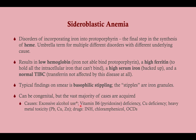Sideroblastic anemia can be due to alcoholism, B6 deficiency — usually associated with isoniazid — copper deficiency (Menkes disease for Step 1 only), heavy metal toxicity with lead being the main one, and drugs including isoniazid, chloramphenicol, and OCDs. Isoniazid is the big one most likely to come up on the test, associated with RIPE therapy for tuberculosis — look for that in the history.